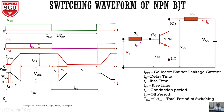It then reaches the maximum value of collector saturation current. Once we give the switching-off signal — that means base current goes to 0 — this bipolar junction transistor remains in the conducting state, so the voltage across collector to emitter will be very small, around 0.7 V. The total on time is nothing but delay time plus rise time plus the conduction period — that total is called total on time.